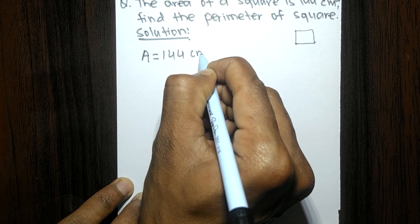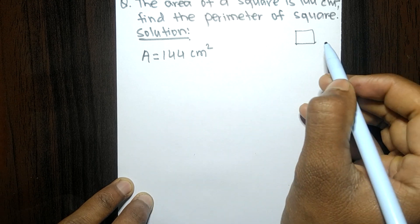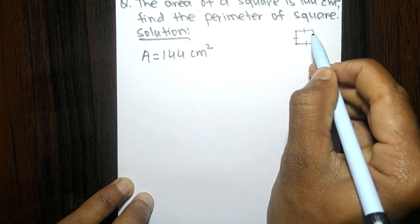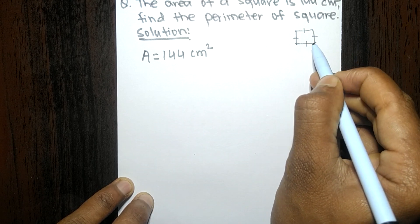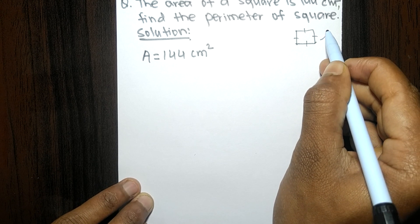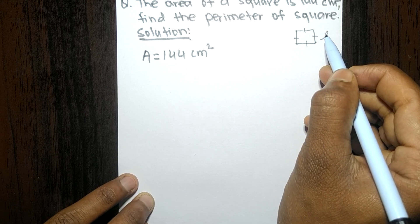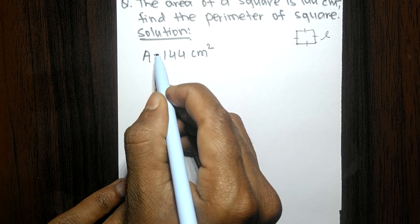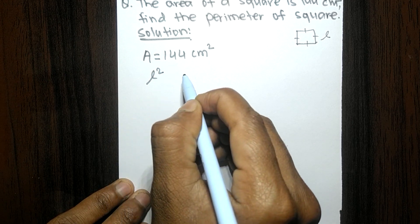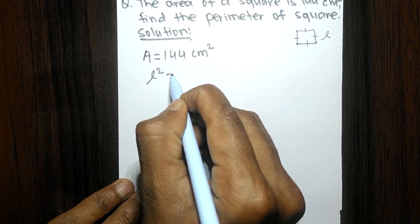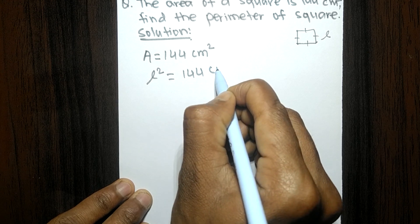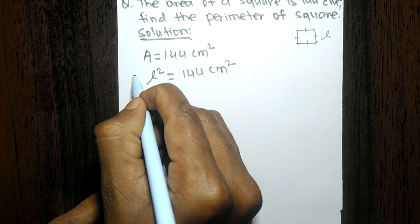In a square, the length of each side is equal, so we consider the length of the side to be l. The area of a square equals l squared, which is equal to 144 centimeter square.